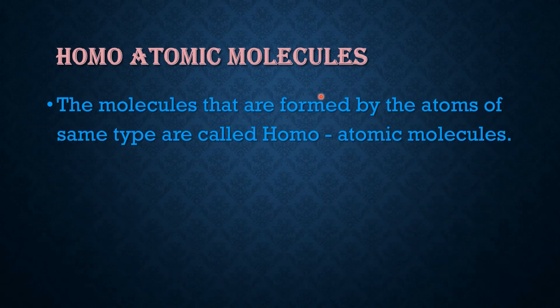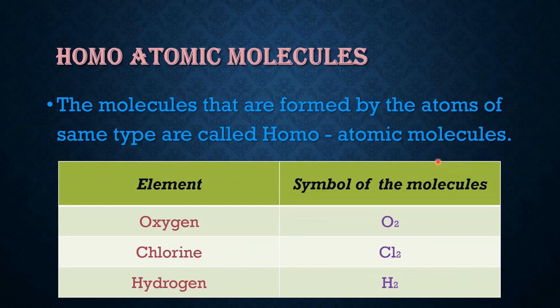Molecules that are formed by atoms of the same type are called homoatomic molecules. Examples of homoatomic molecules include oxygen, fluorine, and hydrogen.